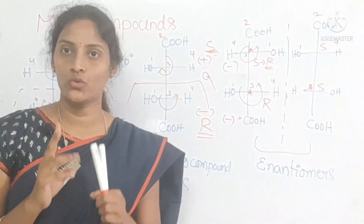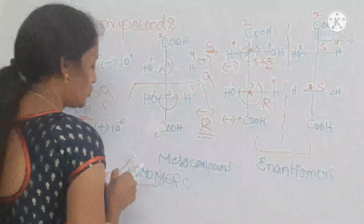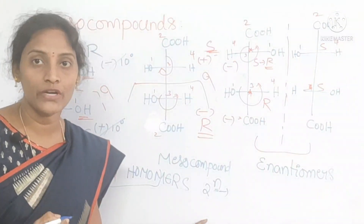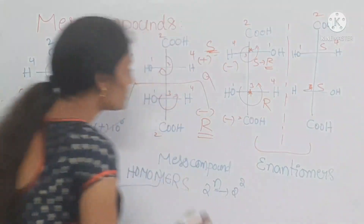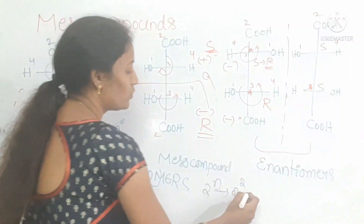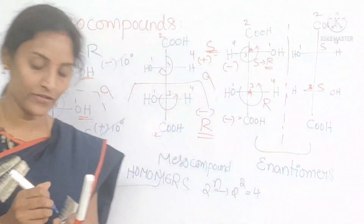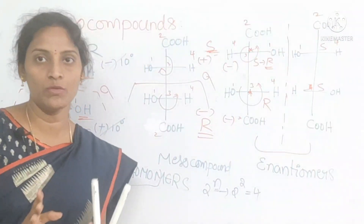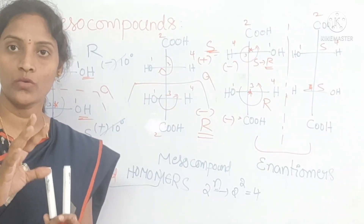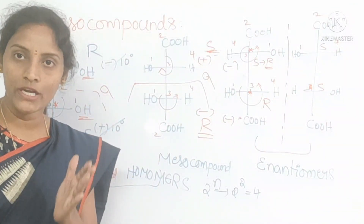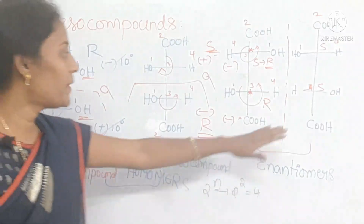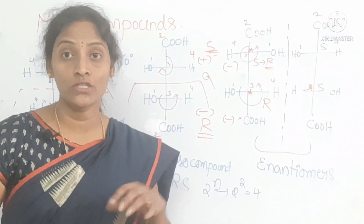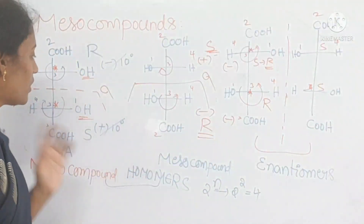You already know the formula to identify the number of isomers: 2 power N, where N is the number of chiral centers. In tartaric acid you have 2 chiral centers, so 2 power 2 = 4. That means tartaric acid has 4 isomers. Among those 4 isomers, 2 are meso compounds and 2 are enantiomers. Those 2 meso compounds are homomers — they are optically inactive due to their plane of symmetry. The remaining 2 isomers are enantiomers — no plane of symmetry and optically active. So 2 isomers are optically active and 2 are optically inactive — 3 types of isomers in total.